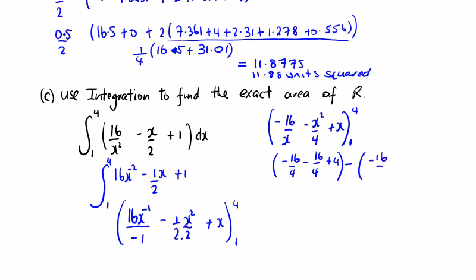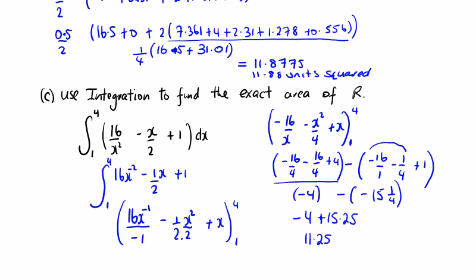So we're going to get minus 16 over 1, minus 1 over 4 plus 1. And simplifying this down, this is going to give me minus 4, minus 4, plus 4. So that's just going to give me a minus 4. And this right-hand side is going to give me minus 16, minus 16 and a quarter for these two. Plus 1, so minus 15 and a quarter. So that's going to give me minus 4 plus 15 and a quarter, or 15.25, which is going to be 11.25. And we can see it's pretty close to the 11.88.